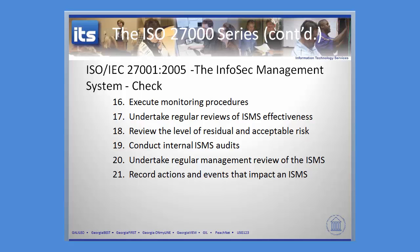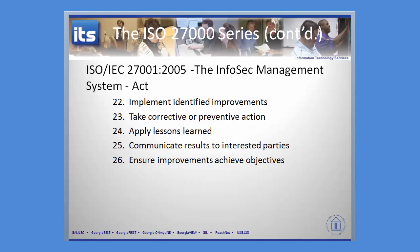You've started with planning, then implemented it, and now you're checking that implementation. That only leaves the last step — act. During the act phase of the InfoSec management system, you're going to implement improvements, hopefully continuous improvements. Take corrective and preventive action as needed, apply lessons learned through an after-action report process, communicate those results, and ensure improvements achieve objectives. Then you loop all the way back around into planning again. This is a continuous loop of plan, do, check, and act, applied against each of those previous sections.